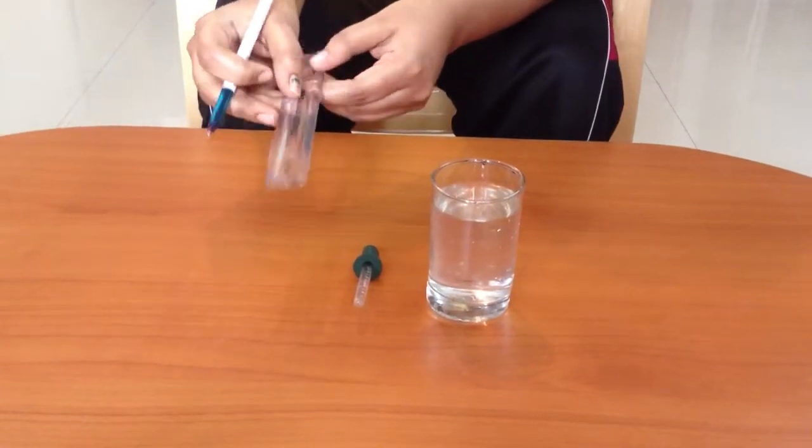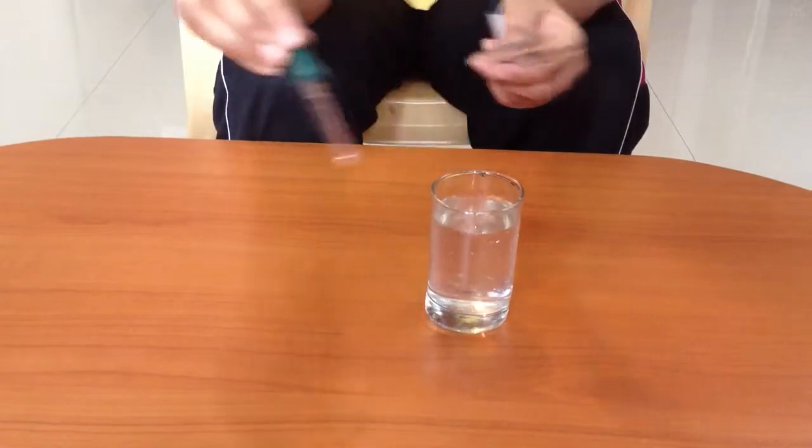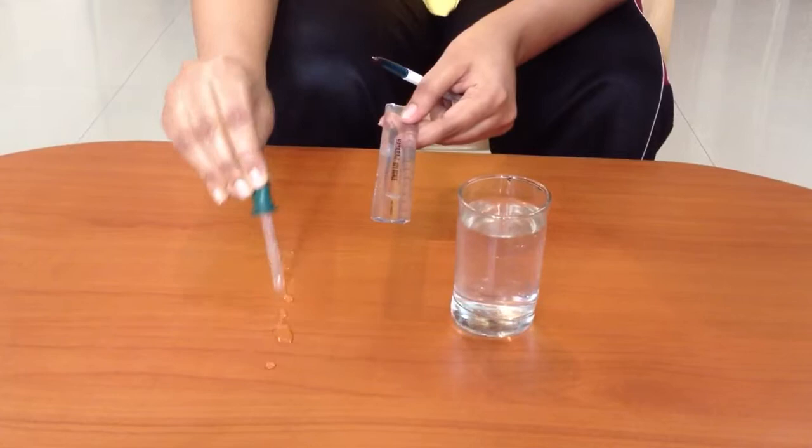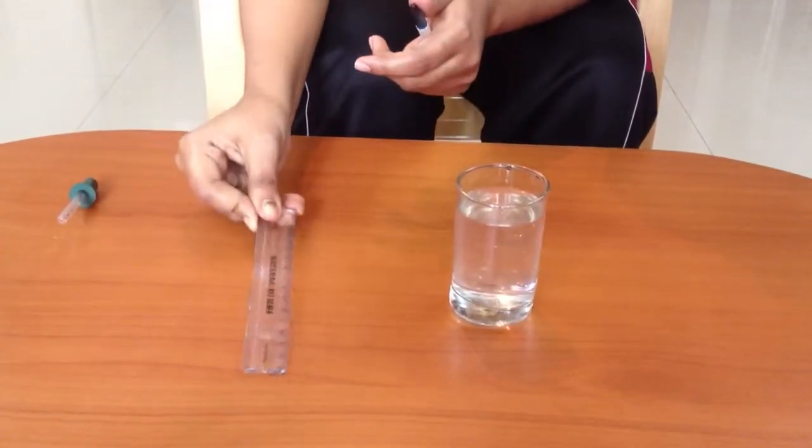Now put a few drops of water on the table. Place the scale on the wet surface.